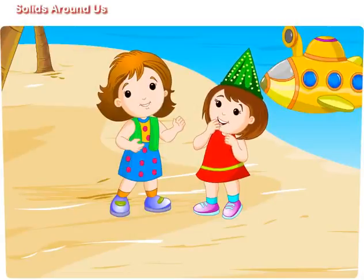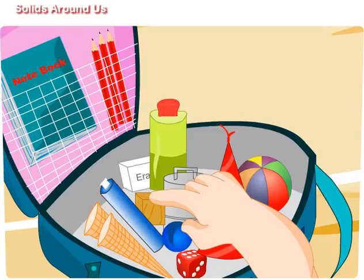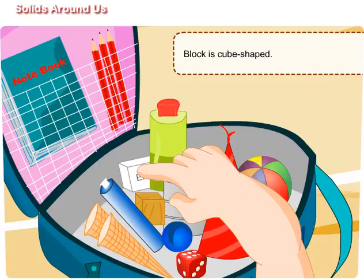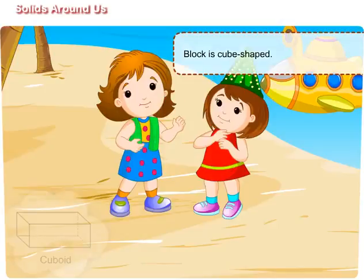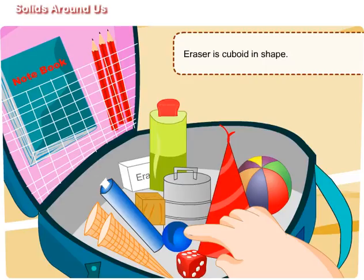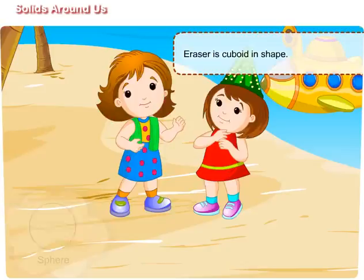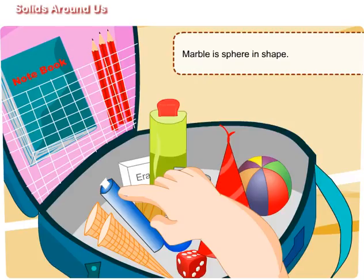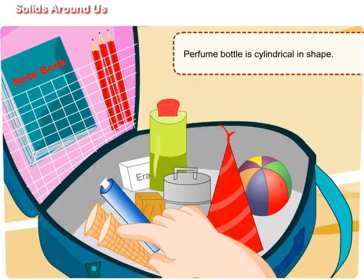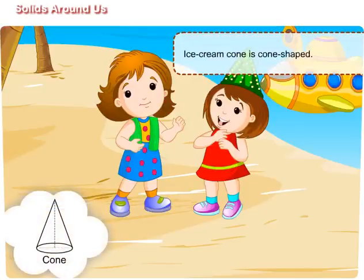Maggie, now tell me — this book is cube-shaped. This eraser is cuboid in shape. This marble is sphere in shape. This perfume bottle is cylindrical in shape. The ice cream cone is cone-shaped.